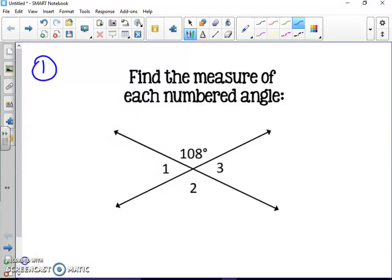All right, so here's number one: find the measure of each numbered angle. First thing I notice is this is 108°, and this angle and this angle are vertical. Vertical angles are congruent, so this angle is also 108°.